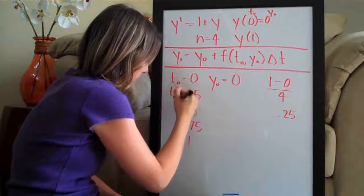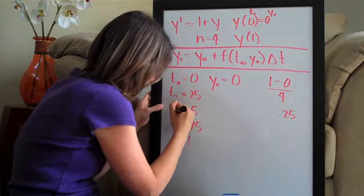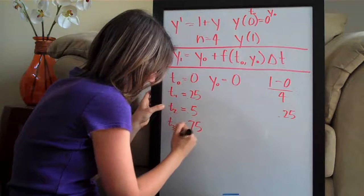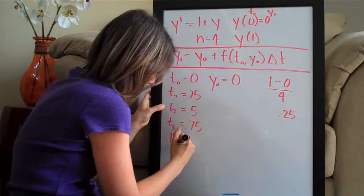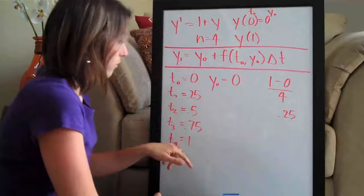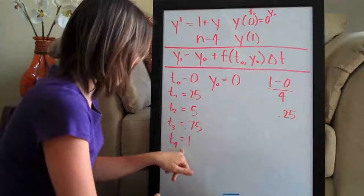And then you can just go ahead and write t1, t2, t3, and t4. I find that this is the least confusing way to start building your table for Euler's method.